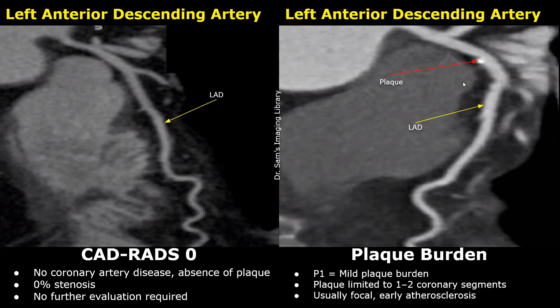For example, if one plaque is present in the proximal segment of the left anterior descending artery and another plaque is present in the distal segment of the left circumflex artery, it will still be classified as P1. In this image, only one plaque is present in the proximal LAD, the stenosis is between 1 and 24%, and other arteries were clear, so it is graded as CADRADS-1, P1.